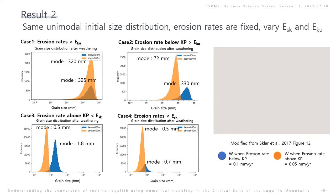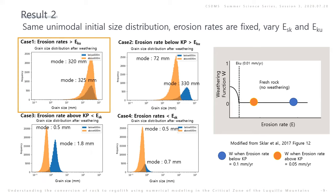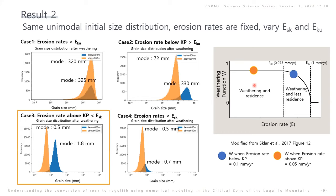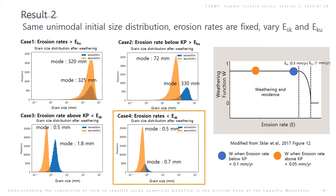In this slide, we check the impact of erosion thresholds EKU and ESK. In Case 1, the erosion rate of both areas is larger than EKU, meaning no weathering process occurs and grain size is not changing. In Case 2, grains in the lower area are not weathered, but grains in the upper area are finer than in Case 1. In Case 3, grains in the upper area get intense weathering, but grains in the other area are less weathered than in Case 2. In Case 4, grains in both areas experience intense weathering, yielding the finest grain size. What is really exciting is that the erosion threshold changes size distribution even though the erosion rate is not changing.